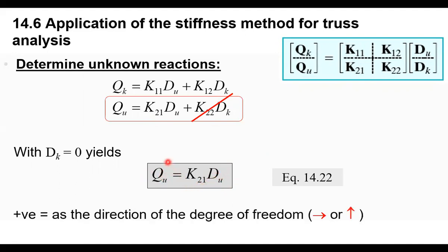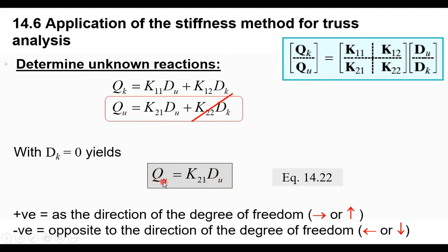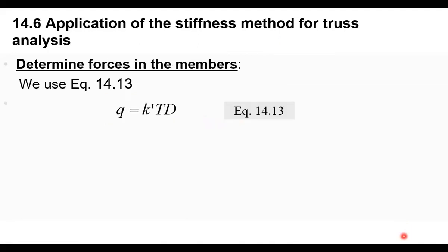If you have a positive value of the reaction, it means it is going to the right or up. If you have a negative value, it means it is opposite to the direction of the degree of freedom — going left or down, depending on whether it is a vertical or horizontal degree of freedom.